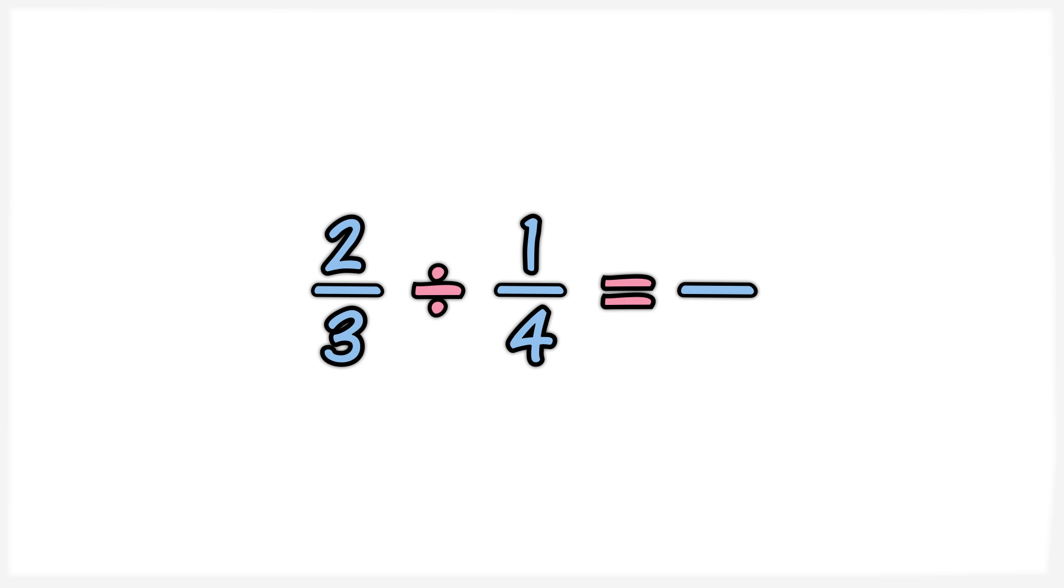Step 1. Turn the second fraction, the one you want to divide by, upside down. This is now a reciprocal. Step 2. Multiply the first fraction by that reciprocal.